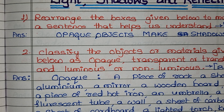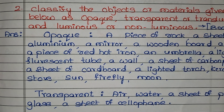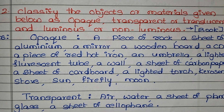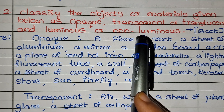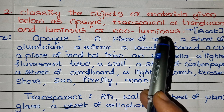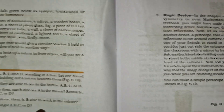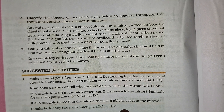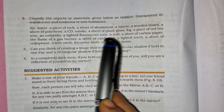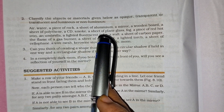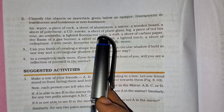The next question is: classify the objects or materials given below as opaque, transparent or translucent, and luminous or non-luminous. They have given so many examples here — air, water, a piece of rock.